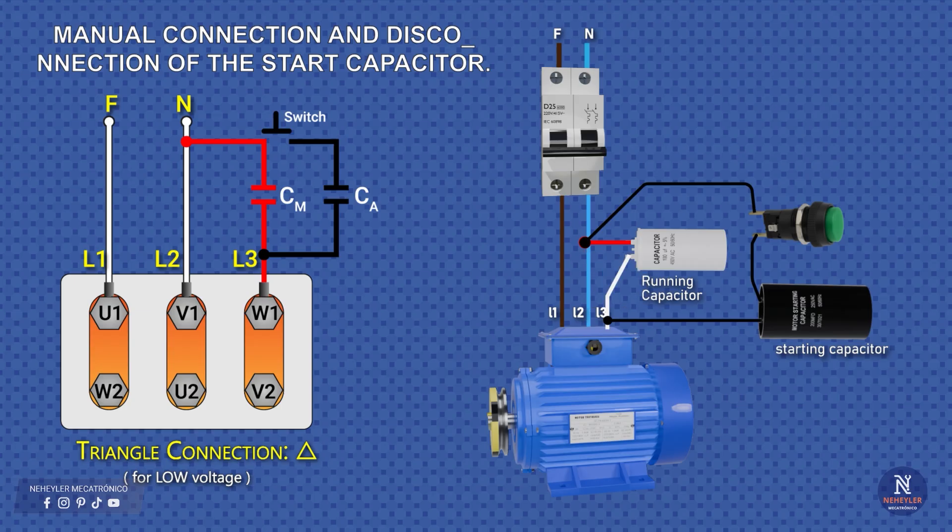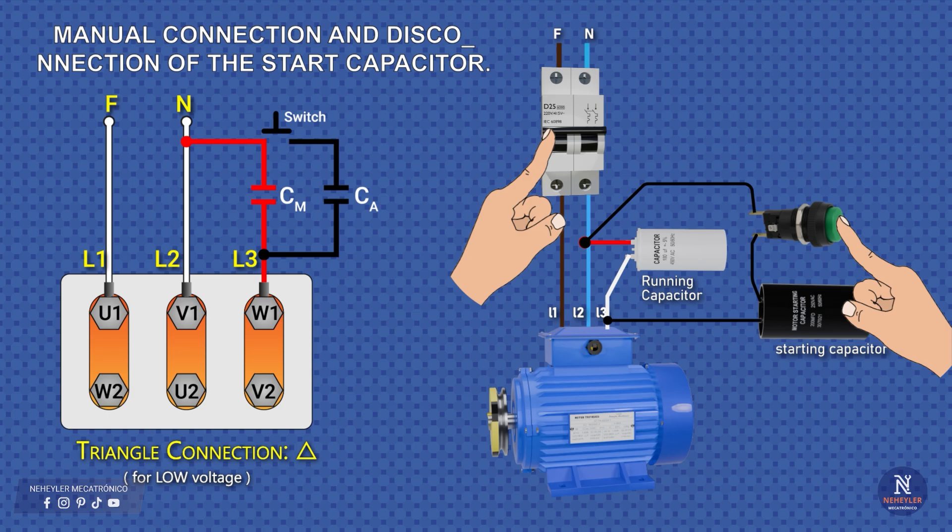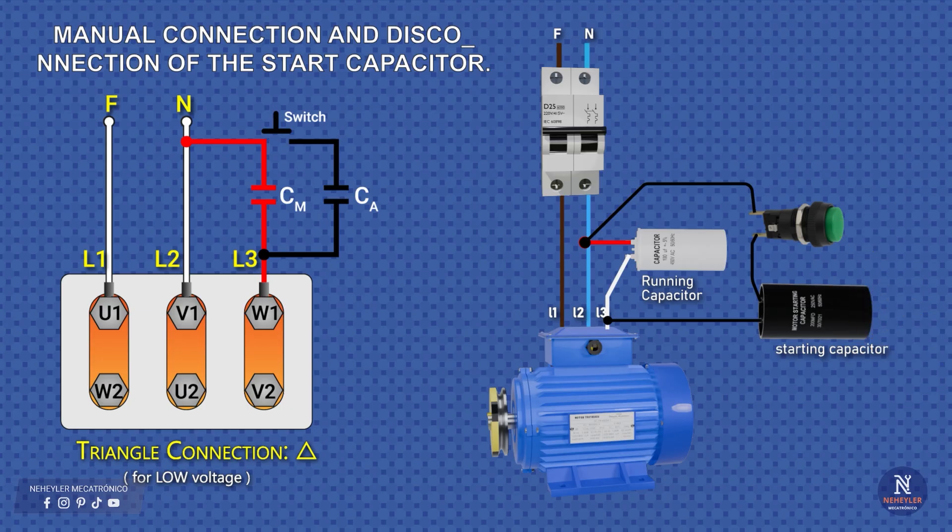How do we make it work? Very simple. With one hand we press the push button and with the other we turn on the circuit breaker. We keep the push button pressed for 3 to 5 seconds, until we hear that the motor has already reached its speed. Then we release the push button, and the motor continues running only with the run capacitor.